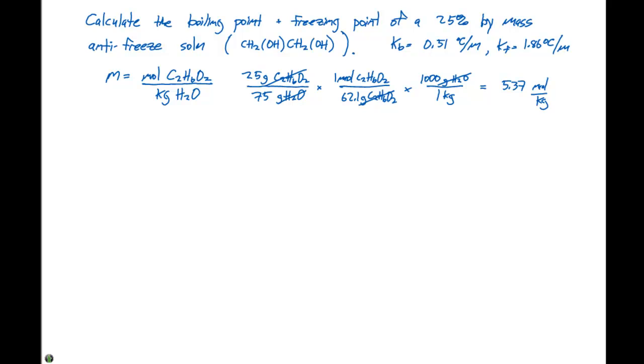So in terms of each of these, we can say that the delta Tb is going to equal Kb times m, and we also know that the delta Tf is going to equal Kf times m. So all we need to do here is put in our values that we've been given in this particular problem. The Kb is going to be 0.51 degrees Celsius per molal and our molality we know is 5.37 molal. And our change in temperature in terms of the boiling point is going to be 2.7 degrees Celsius.